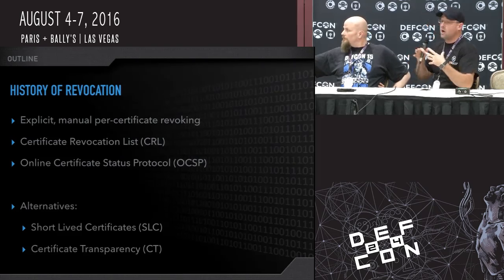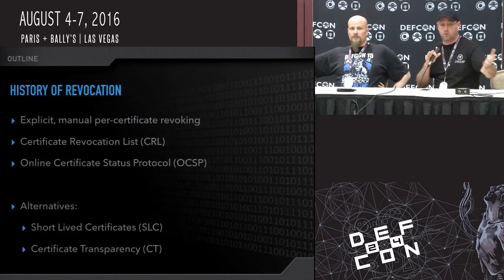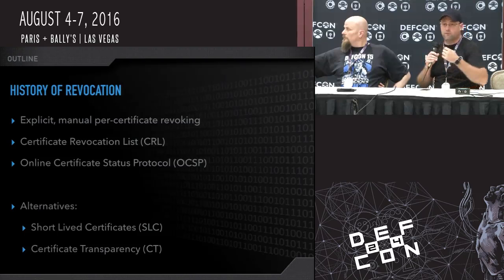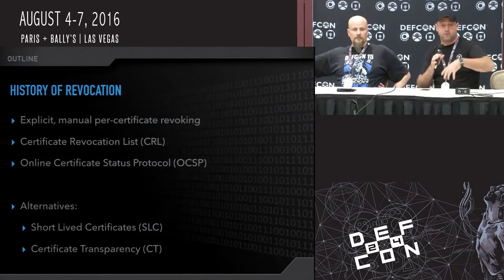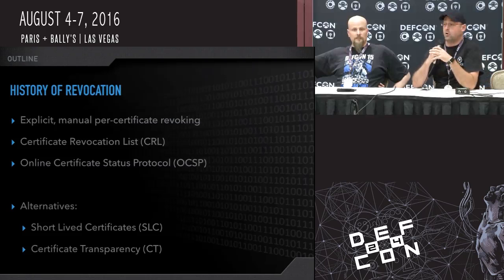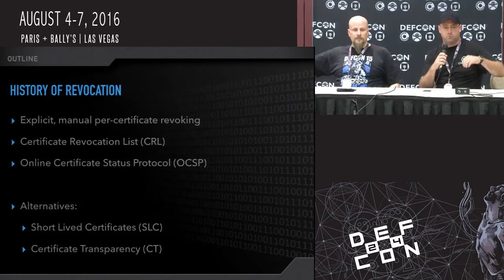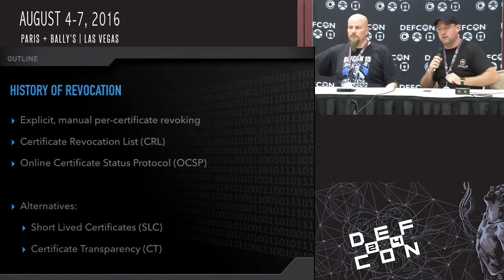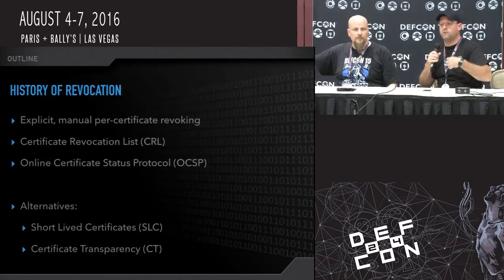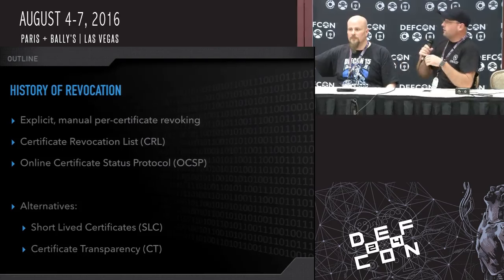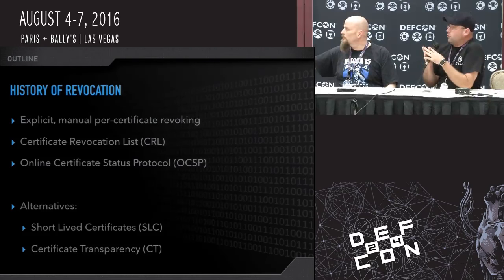CRLs are a way of taking a lot of certificates and bundling them up in a file that can be dispersed. That evolved because it didn't scale — if you have a large file with every certificate being revoked, it grows and grows and gets out of control. So OCSP is the next evolution: think of it like a database query. You ask, 'Is this certificate good?' and it tells you yes or no. You don't retrieve all of them — you only get what you need. Down the road, short-lived certificates and Google's Certificate Transparency are alternatives.